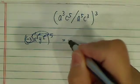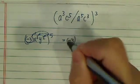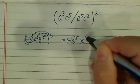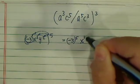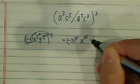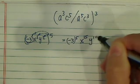So you have minus 3 to the fifth, x to the 3 times 5, which is 15, and y to the 10.